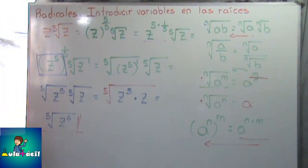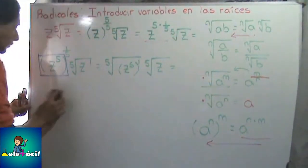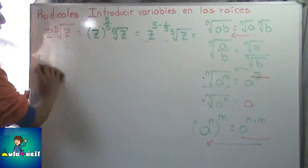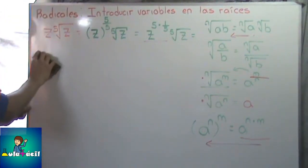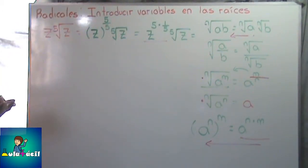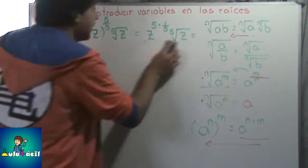Entonces como ven, es relativamente simple, lo mismo que el ejemplo anterior. Vamos con otro ejemplo. En todos estos ejemplos, la variable que hay afuera es la misma que la que tenemos adentro. Puede haber casos, como en el ejemplo que sigue, en donde las variables sean completamente diferentes — no importa, de todos modos se puede hacer.